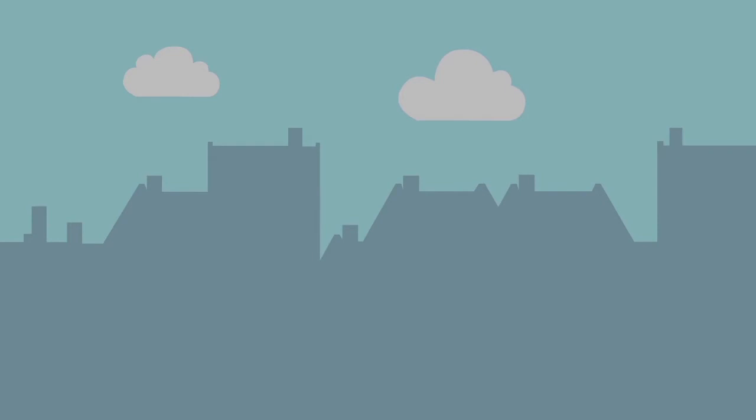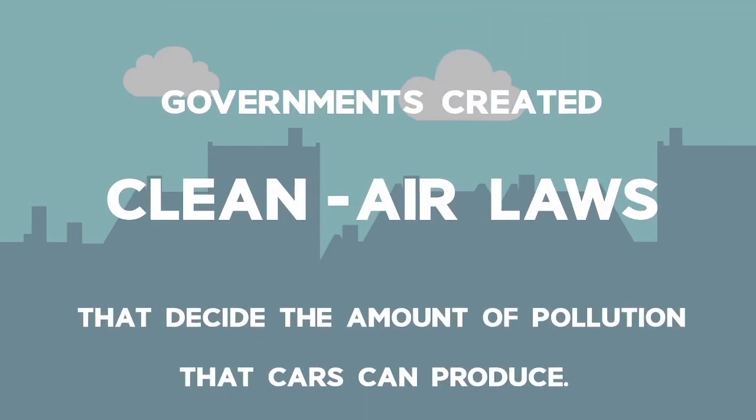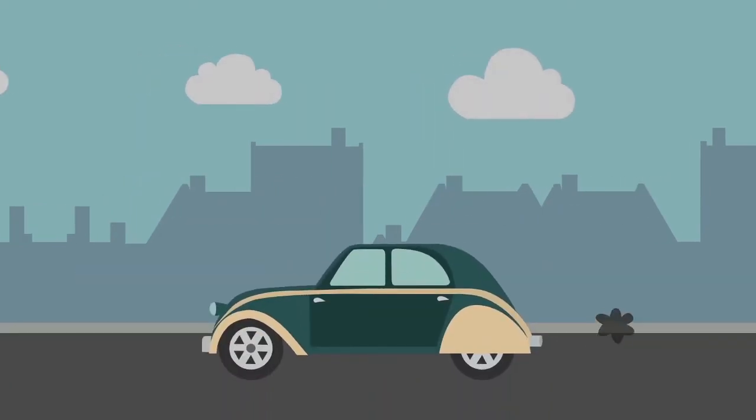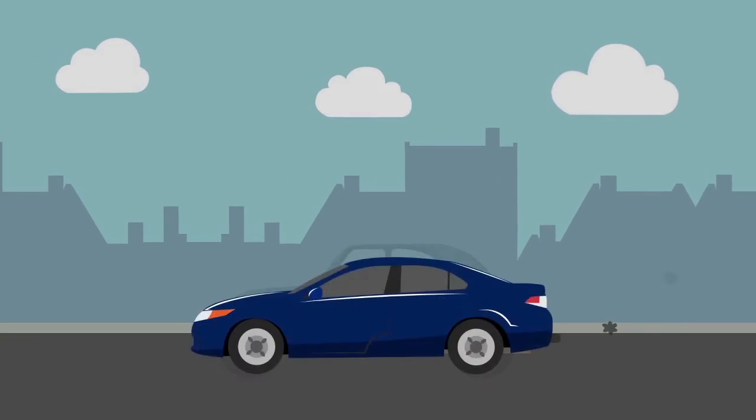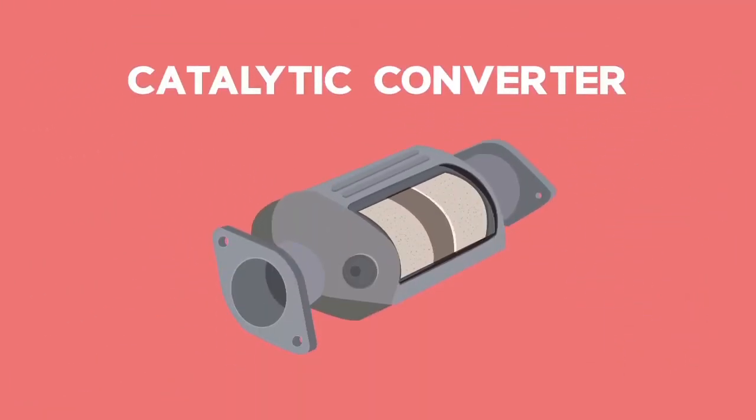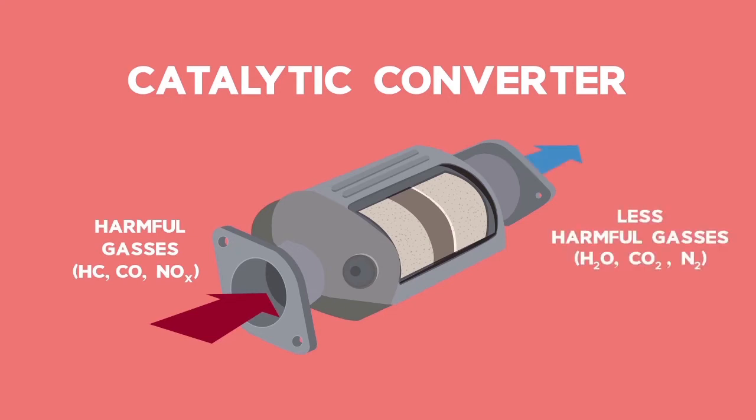To solve those problems, governments created clean air laws that decide the amount of pollution that cars can produce. Over the years, automakers have made cars better to keep up with those laws. A really clever device called a catalytic converter was invented to help control the toxic gases made. It lets nitrogen oxides and carbon monoxide turn into less harmful gases before leaving the car.